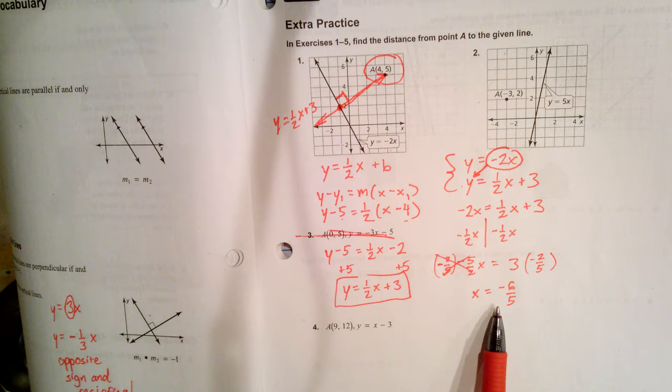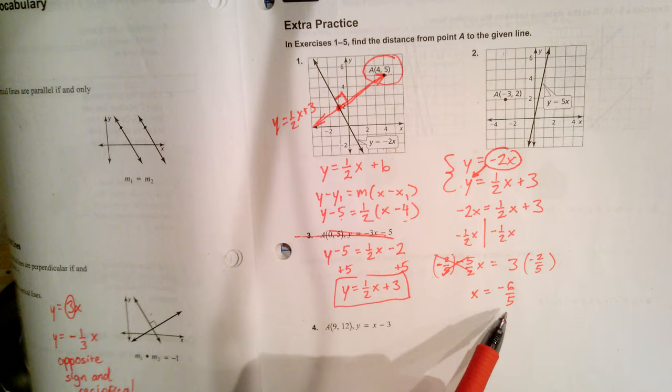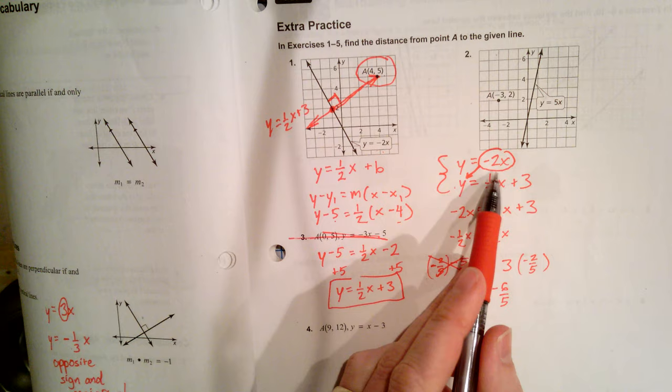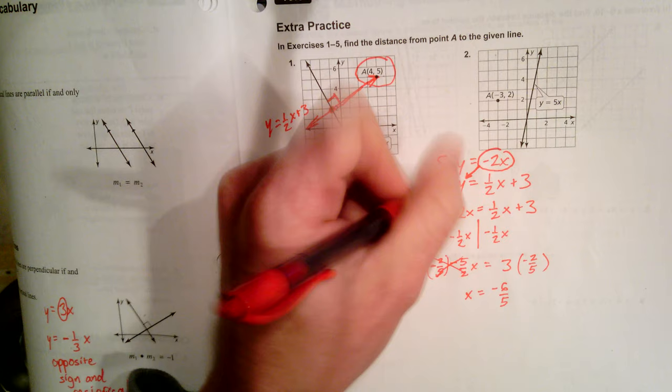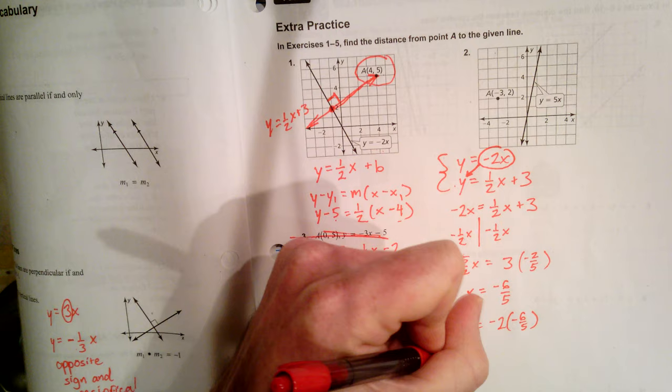I'm going to go ahead and subtract 1 half x from both sides. And it looks like I get negative 2 and a half. Let me go ahead and make that a fraction. I think that's going to be easiest for me here. So negative 2 and a half would be negative 5 halves.